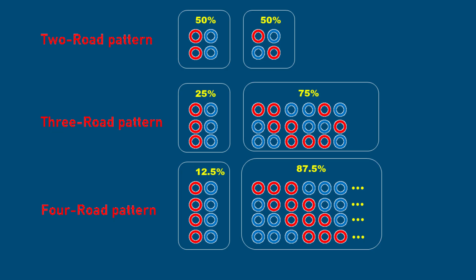Now let's dive into permutations in Baccarat — specifically the two-road, three-road, and four-road patterns. These combinations provide valuable insights for betting strategies. First, we have the two-road pattern, where two consecutive rounds are analyzed: banker-banker, player-player, banker-player, and so on. The probability of consecutive banker or player wins is 50%, and the probability of alternating wins is also 50%. While this may feel too random to predict, this randomness actually holds the key to better betting decisions.